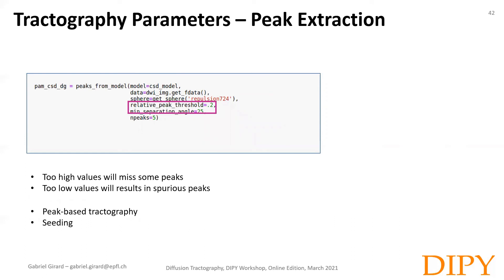When extracting the peaks from ODF using the peaks from model function, two parameters are of interest and might need to be adjusted to your reconstruction model and the noise level of your data. The first is the relative peak threshold — orientations with ODF value inferior to this value will be considered spurious peaks and not be extracted. The second is the minimum separation angle; most reconstruction methods cannot distinguish peaks below 30 degrees or so. Ideally, you want these parameters to allow extraction of accurately estimated peaks while reducing the amount of spurious peaks.